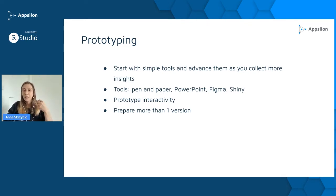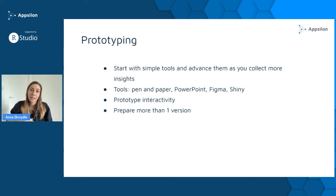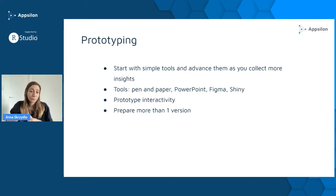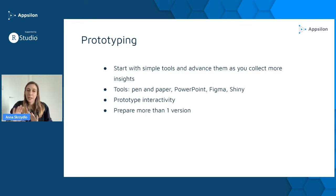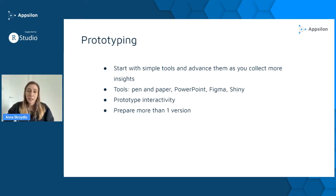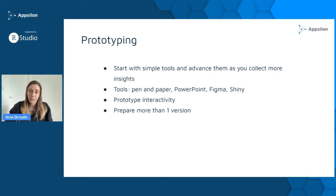As you already have a better understanding of your users, you can concentrate on more details and use more advanced, dedicated tools like Figma, for example. Shiny itself is also great for prototyping — we can very easily create an app with default elements, leaving the server part behind, just putting the UI together and trying to show how you understand the app flow, then giving it to users so they can check if this is what they actually need.